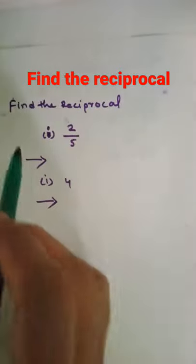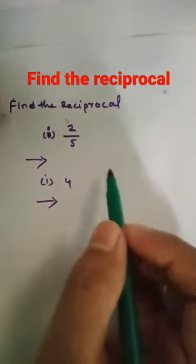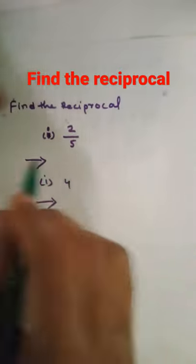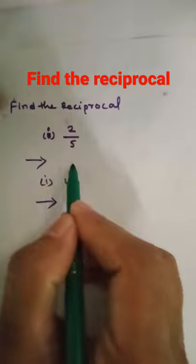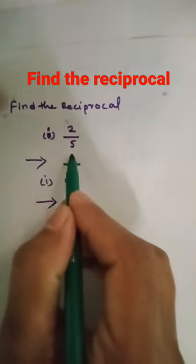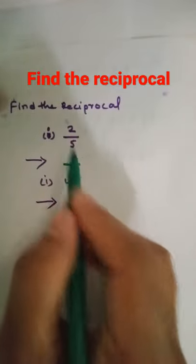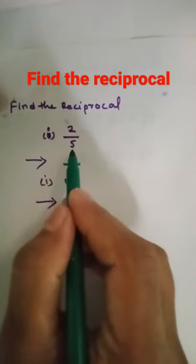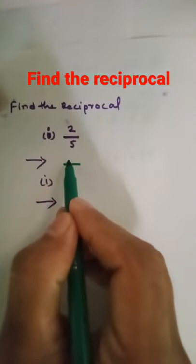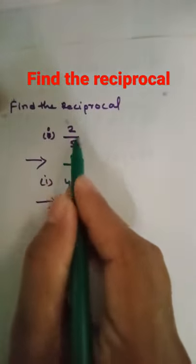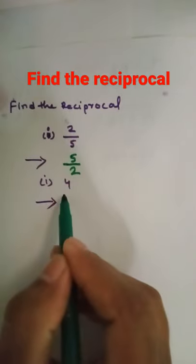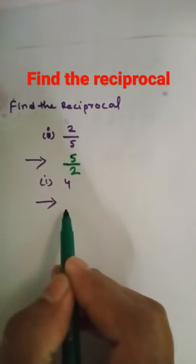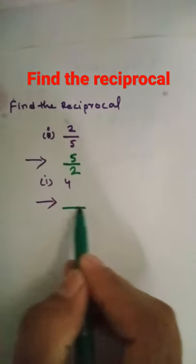To find the reciprocal of this, you just need to change the numerator and denominator. This five will go up and this two will come down.